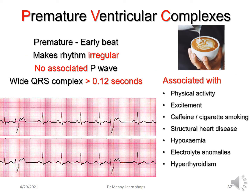When we look at premature ventricular complexes, because they're premature — they're early — they often make the rhythm irregular. Because they come from the ventricles, they're not associated with a P-wave, and they have a wide QRS complex, more than 0.12 seconds or three small squares. They can be normal or abnormal. Typically associated with increased physical activity, excitement, sympathetic nervous system stimulation, caffeine or cigarette smoking, structural heart disease, hypoxemia, electrolyte anomalies, and thyroid problems.